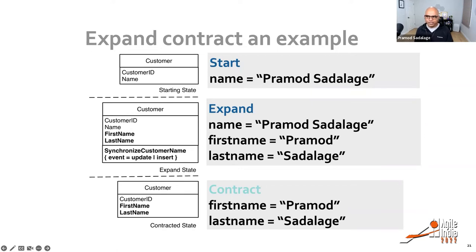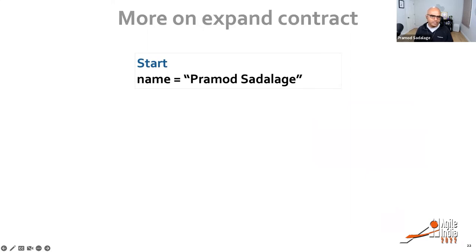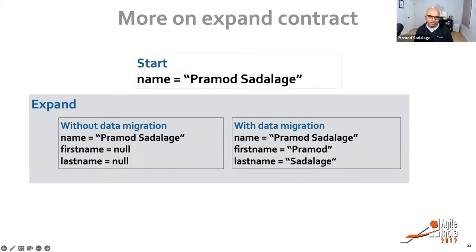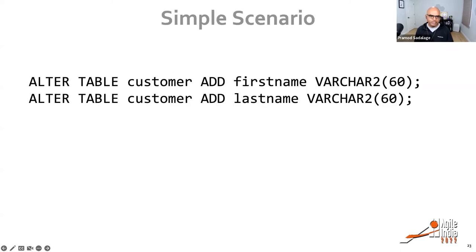You have two options to do this split. Without data migration, you simply introduce the two new columns — first name and last name. This works if you're not yet in production, say only in QA. You introduce the two new names, delete the old name column, and from now on all new data uses first name and last name. But for applications already in production, you can't just add two null columns — you need a data migration step.